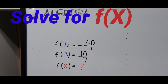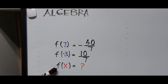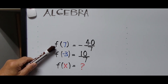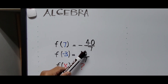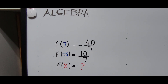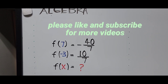Hello everyone, welcome to Cassiano Easy Math. This video is about solving systems of equations, and we're trying to find the value of f(x). The system gives us f(7) equals negative 40 over 7, and f(-3) equals 10 over 7. For those new to my channel, please like and subscribe for more videos.